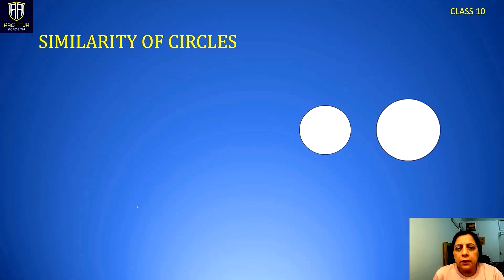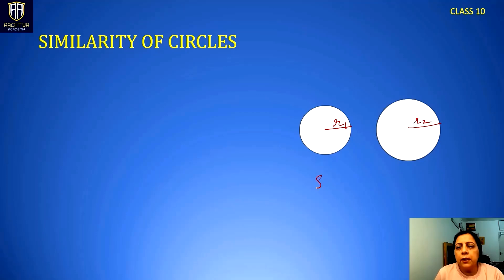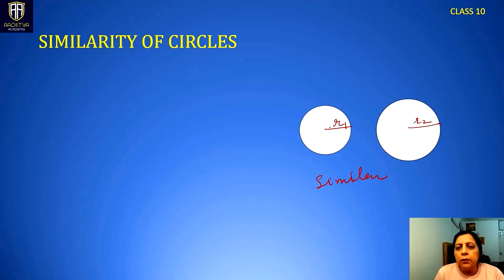Regarding similarity of circles — circles are similar because their shapes are always the same and they have only one parameter, the radius R1 and R2. So we can say all circles are similar to one another because they are only separated by their radii, which is their parameter.